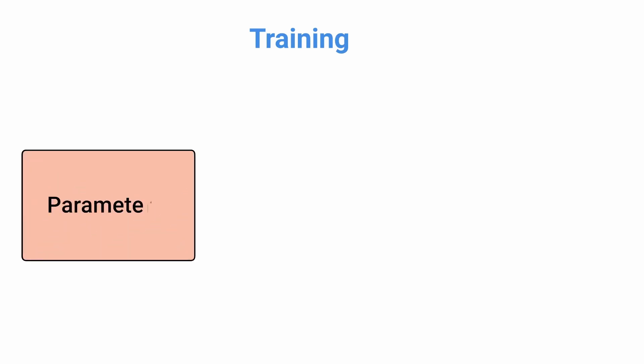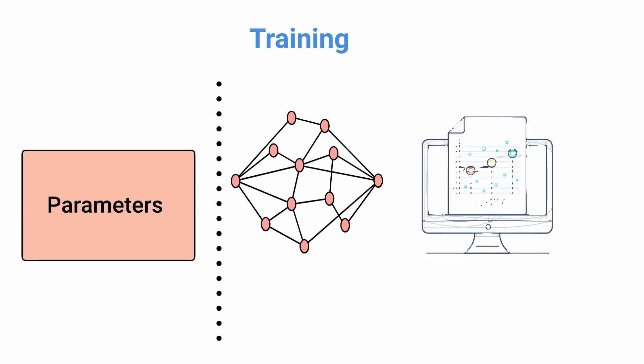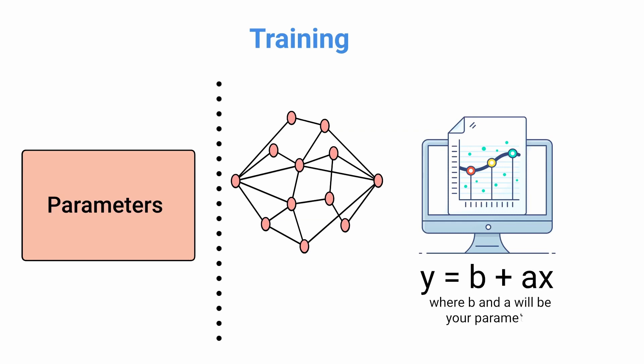Parameters. These are the coefficients of the model, and the model itself chooses them. It means that while learning, the algorithm optimizes these coefficients according to a given optimization strategy and returns an array of parameters that minimize the error. To give an example, in a linear regression task, you have your model that will look like y equals b plus ax, where b and a will be your parameters. The only thing you have to do with those parameters is to initialize them, which we will see later on what it means.